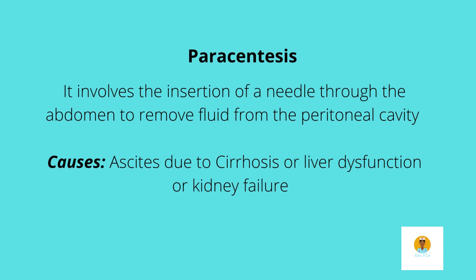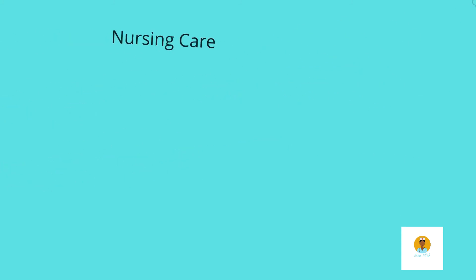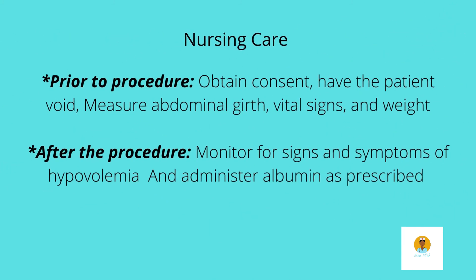The last GI procedure we'll talk about in this video is paracentesis. Paracentesis involves the insertion of a needle through the abdomen to remove fluid from the peritoneal cavity, which is your abdominal cavity. It is primarily done for patients with ascites due to cirrhosis or liver dysfunction. Prior to the procedure, ensure the patient signs a consent form since it is invasive. Also have the patient void beforehand — a distended bladder increases the risk of nicking it during the procedure.